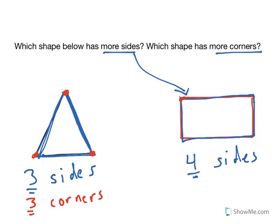And the rectangle, you probably guessed correctly, will have one, two, three, four corners. So once again, the rectangle has more corners as well.